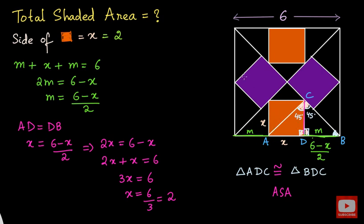Now let us come to the purple squares. Think about how you can find their area — you have to think a little bit out of the box. Let me draw the diagonals of the purple colored square. You can observe from the figure that if I call a segment PQ, the length PQ is nothing but the side length of the outer square. Let me call the purple square's side length as A. Our goal is to find the value of A, so first let us find the diagonal of the purple colored square.